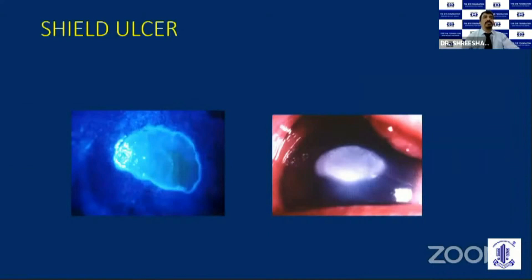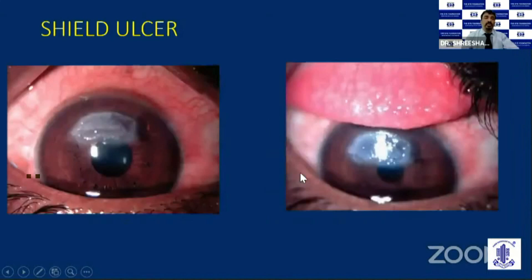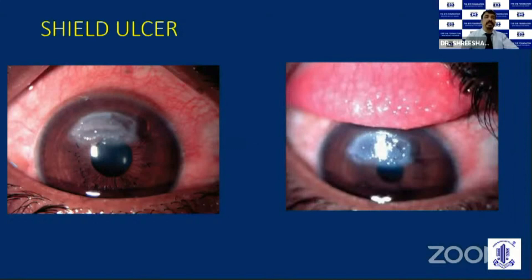The next common condition is the shield ulcer, seen in advanced cases of vernal keratoconjunctivitis. The ulcer is seen in the mid-peripheral cornea in the upper one-third. It goes through two to three stages: the initial stage with epithelial defect usually heals with lubricants and medications. Stage two involves inflammatory debris accumulating at the base of the ulcer and exhibits poor response to medical therapy. The final stage is an elevated plaque — large-based with elevated plaque — which definitely needs surgical intervention with plaque removal and amniotic membrane transplantation.